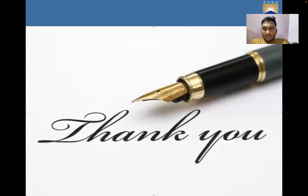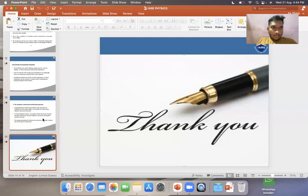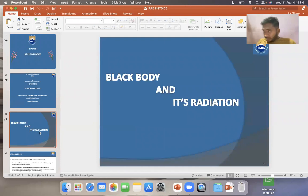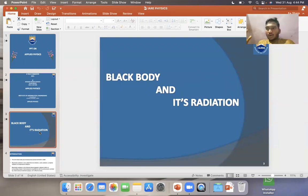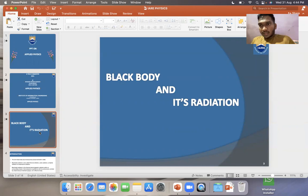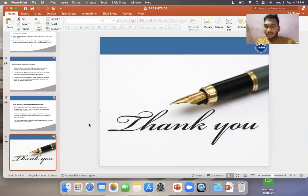By this, my concept video on the Applied Physics topic of black body and its radiation is completed. A black body is an idealized opaque body made of platinum black with a small hole; the radiation it emits is called black body radiation. It absorbs all types of radiation at all frequencies, and to remain in thermal equilibrium it must also emit all frequencies of radiation. Thank you very much.